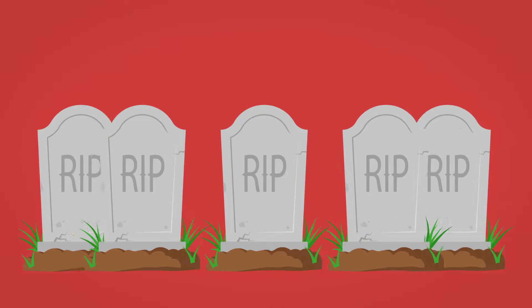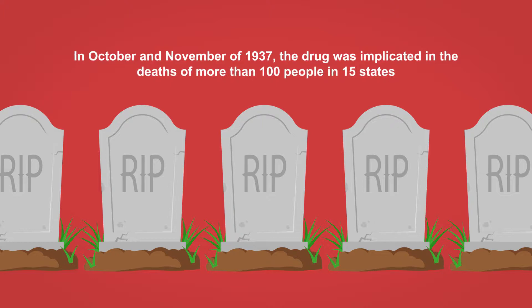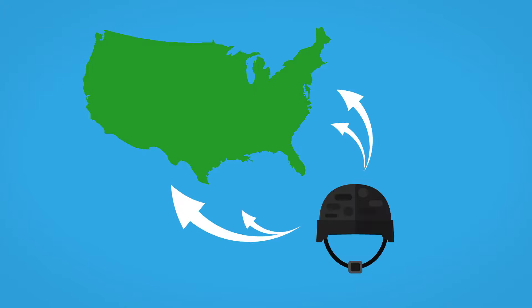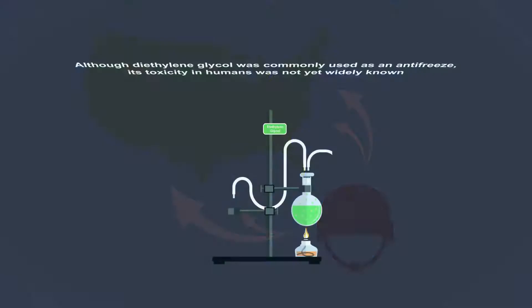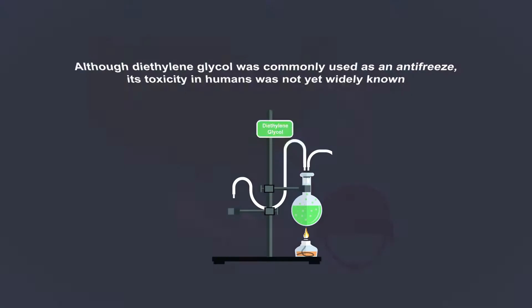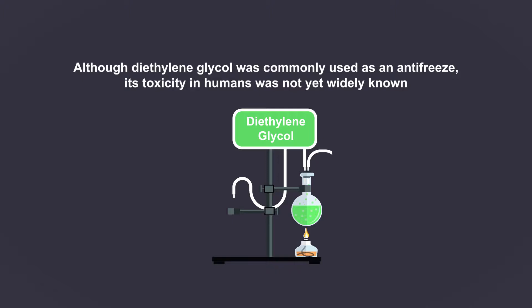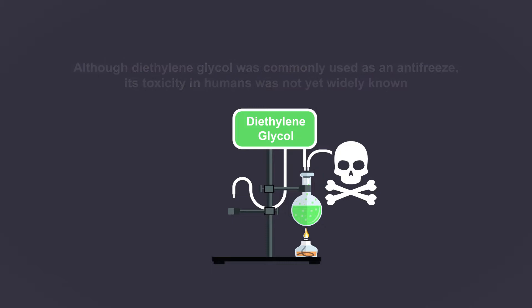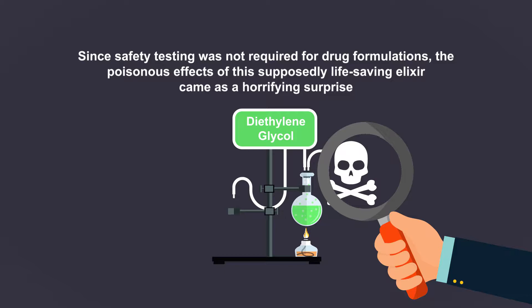Within weeks, however, there was a reported sudden rash of deaths in patients to whom this elixir was administered. In October and November of 1937, the drug was implicated in the deaths of more than a hundred people in fifteen states. Once the association to sulfanilamide elixir was identified, scores of FDA agents and others were sent out to recover the distributed medicine. Although diethylene glycol was commonly used as an antifreeze, its toxicity in humans was not yet widely known. Since safety testing was not required for drug formulations in those days, the poisonous effects of this supposedly life-saving elixir came as a horrifying surprise.